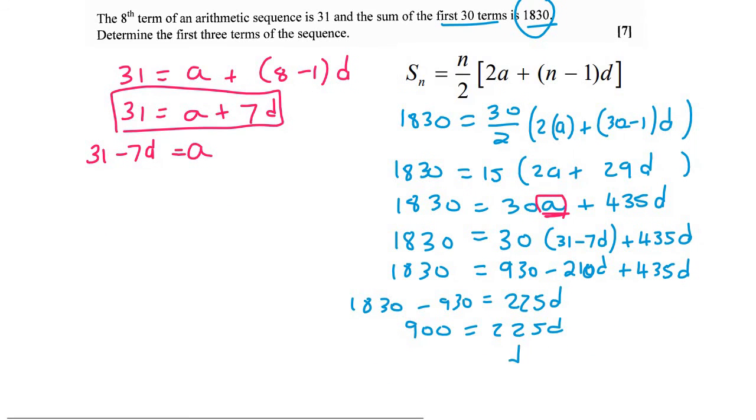And then divide by 225. And you're going to end up with 4. D is 4. Then we can easily get A by just plugging in this over here. And so A would be 31 minus 7 times 4. And so A would be 3. Easy as that.